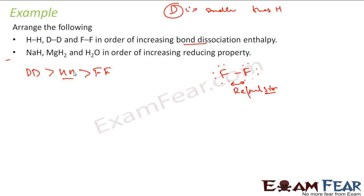The next is reducing property. For reducing property, you just find the oxidation number first. NAH, oxidation state of hydrogen is minus one. MGH2, oxidation state is minus one. H2O, plus one. If you don't know how to find, watch the video of redox reaction, maybe we have talked about oxidation state.